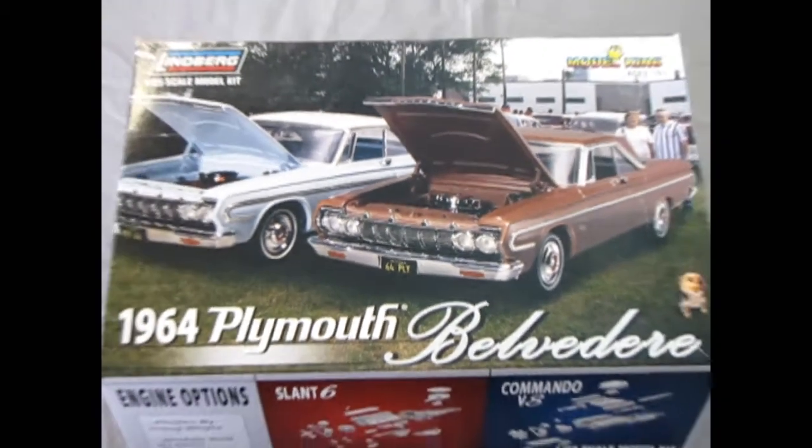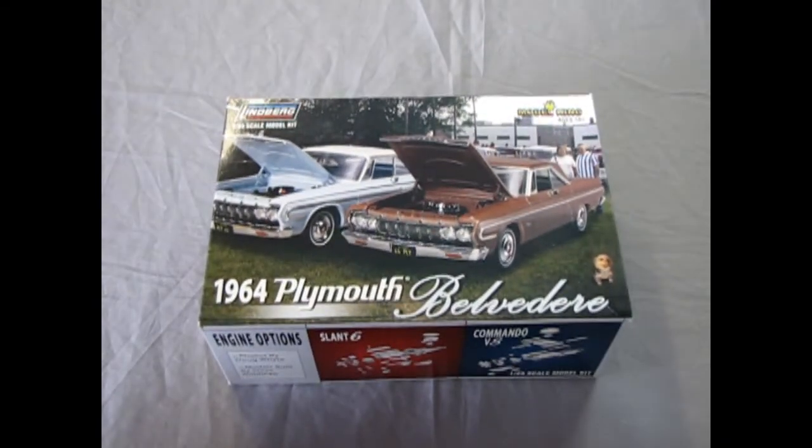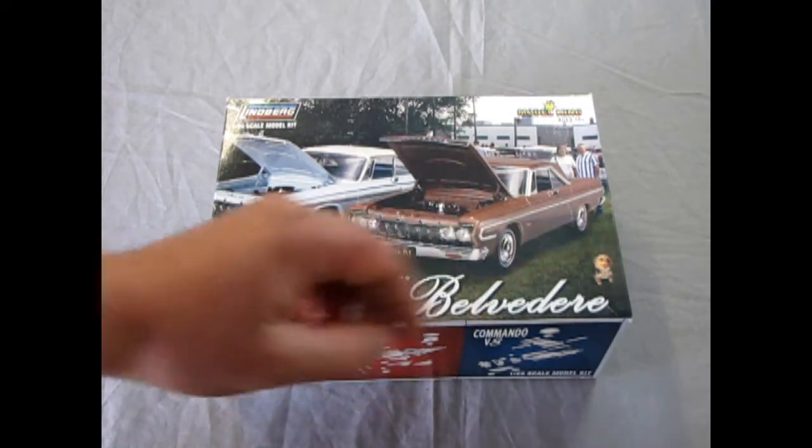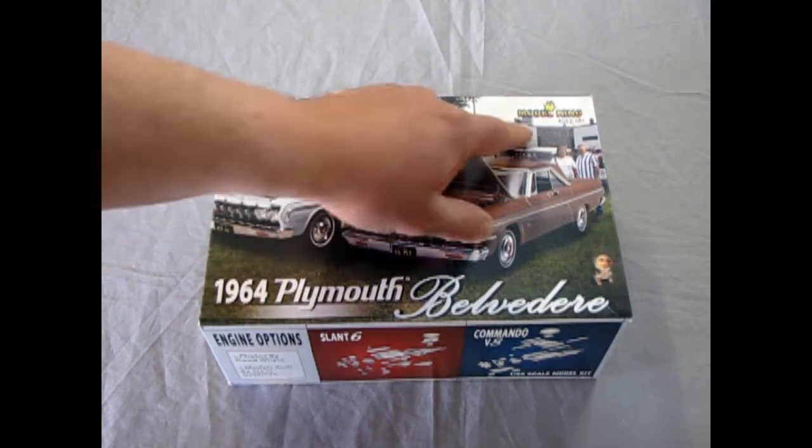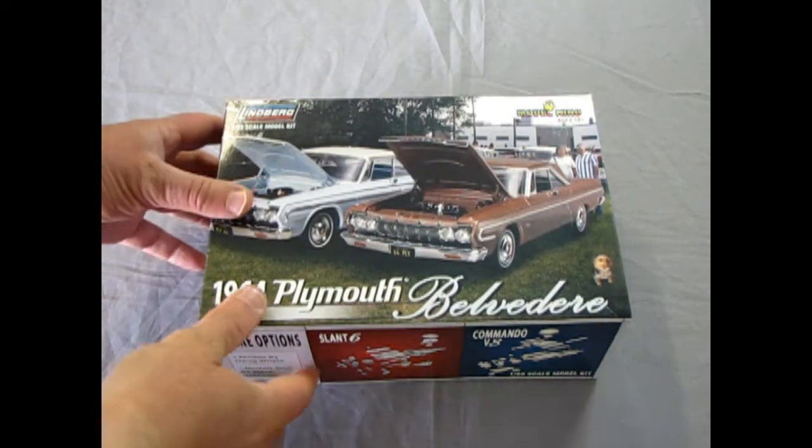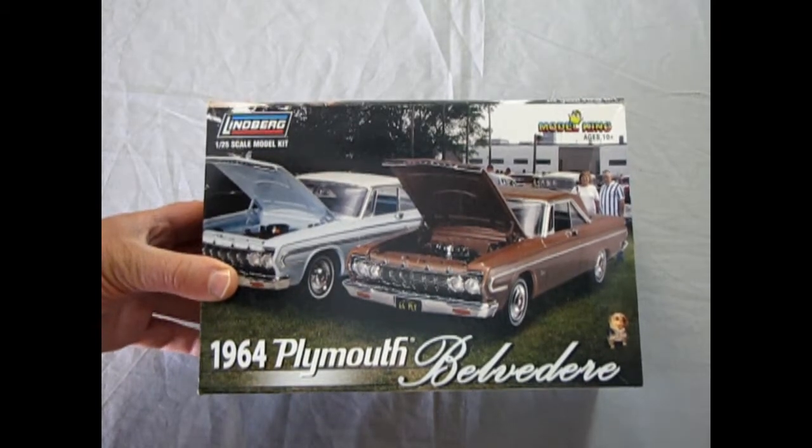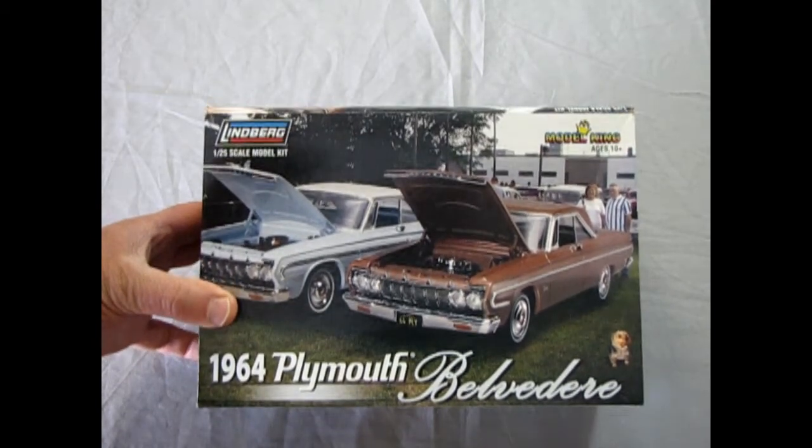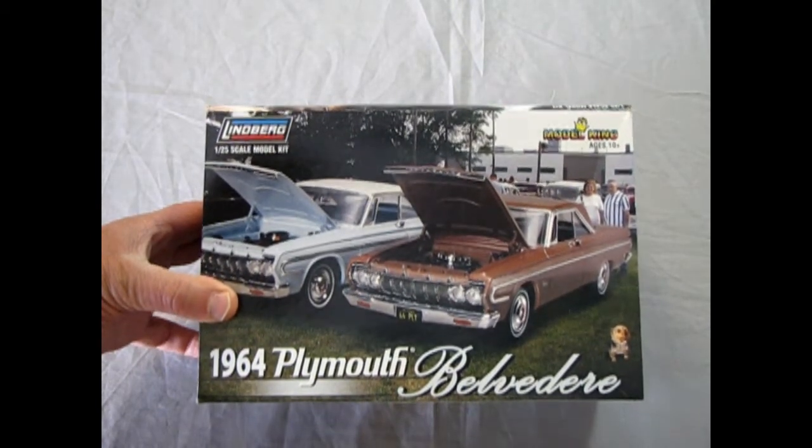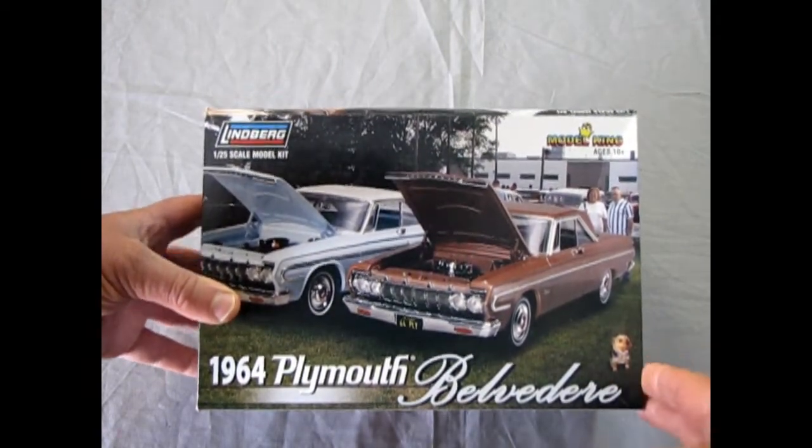And now, without further ado, let's go down where the rubber hits the road and rip the top off this box and see what's in the box. Now, last week we were looking at the Lindberg Dodge 330, and today we're going to be looking at the 1964 Plymouth Belvedere, again by Lindberg and hosted by Model King. Model King makes a whole line of products using different manufacturer's molds.